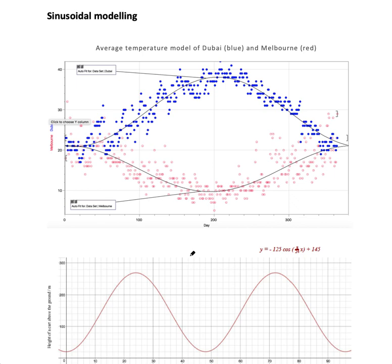One of my favorite types of IA: sinusoidal modeling — the type of model that increases and decreases periodically. One of my favorite IAs is modeling a ferris wheel, specifically the Dubai Eye, the biggest ferris wheel in the world. As time passes, the height of your capsule goes up, then down, then up, then down. You can make this model and then find at which time you're above a certain height — say, high enough to see your house.